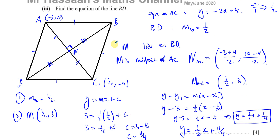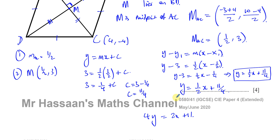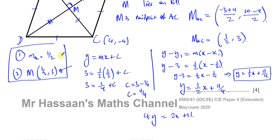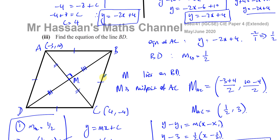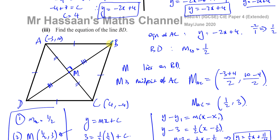There are a couple of different methods you could use. In this case we had no other choice but to use point M, as it's the only point we know on line BD. We used two key facts about a rhombus: the diagonals are perpendicular to each other, and they bisect each other. Without knowing those facts you wouldn't be able to find the equation of line BD, since we don't know points B or D.